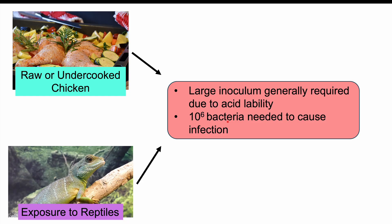In low gastric acidity states, a lower dose of bacteria is sufficient for infection. This applies to patients taking antacids or proton pump inhibitors like pantoprazole, and also to older patients, since gastric acid levels decline with age. In these cases, as few as 10^3 — only a thousand bacteria — may be needed to cause infection.